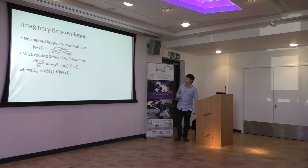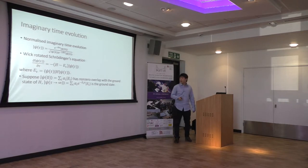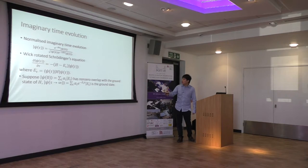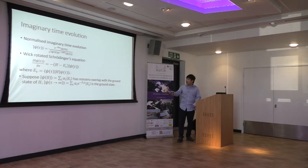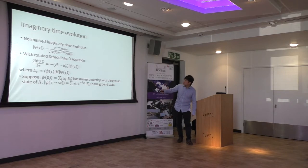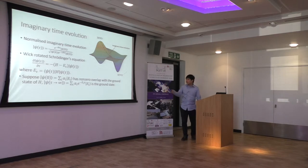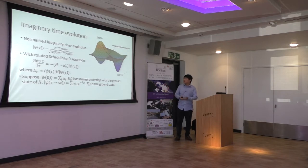A very powerful result for imaginary time is: suppose the initial state has non-zero overlap with the ground state of the Hamiltonian — that is, alpha_0 is not zero. Then the state under imaginary time evolution will always converge to the ground state. This is because we have exponential decay with energy — higher energy states decrease faster while lower energy states decrease slower. So intuitively, for any given initial state, imaginary time evolution will always go to the ground state and avoid all local minima.